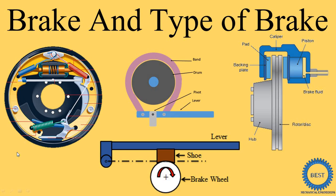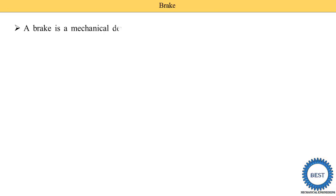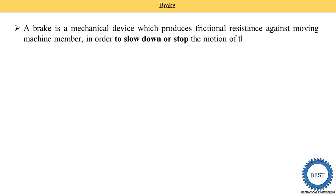In this video, I explain what is brake and types of brake. A brake is a mechanical device which produces frictional resistance against moving machine members in order to slow down or stop the motion of the machine. Its function is to reduce the speed of any rotating member or stop the rotating members.